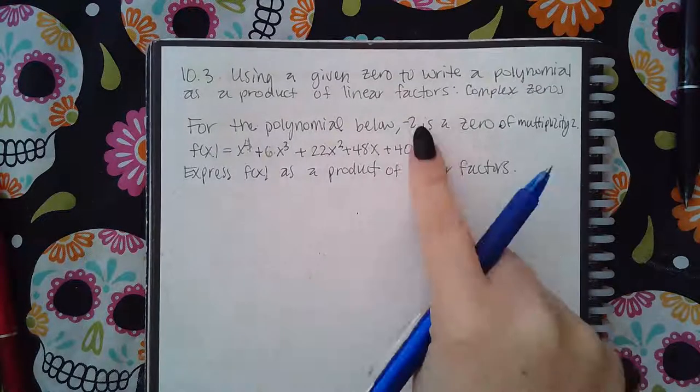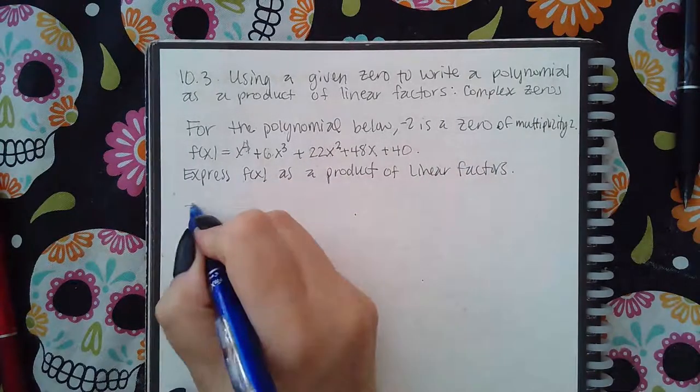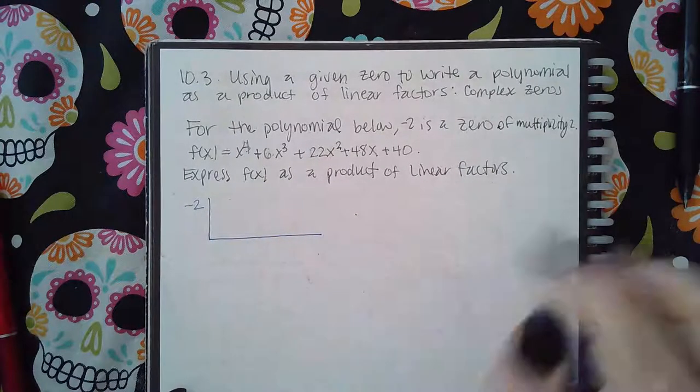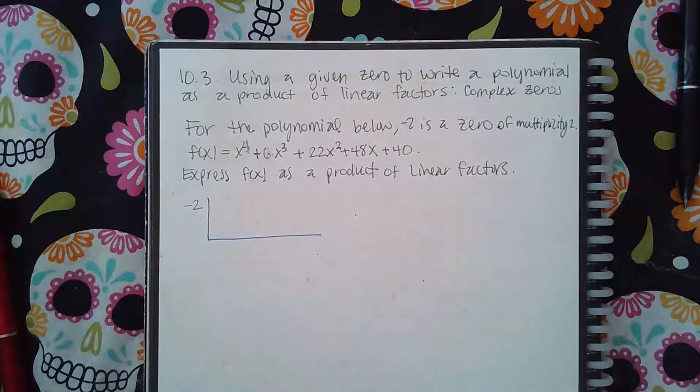If I know this is a multiplicity, if I know this is a zero, then I know that I can divide by it in the synthetic division. And because it's of multiplicity 2, that means I can divide by it twice.